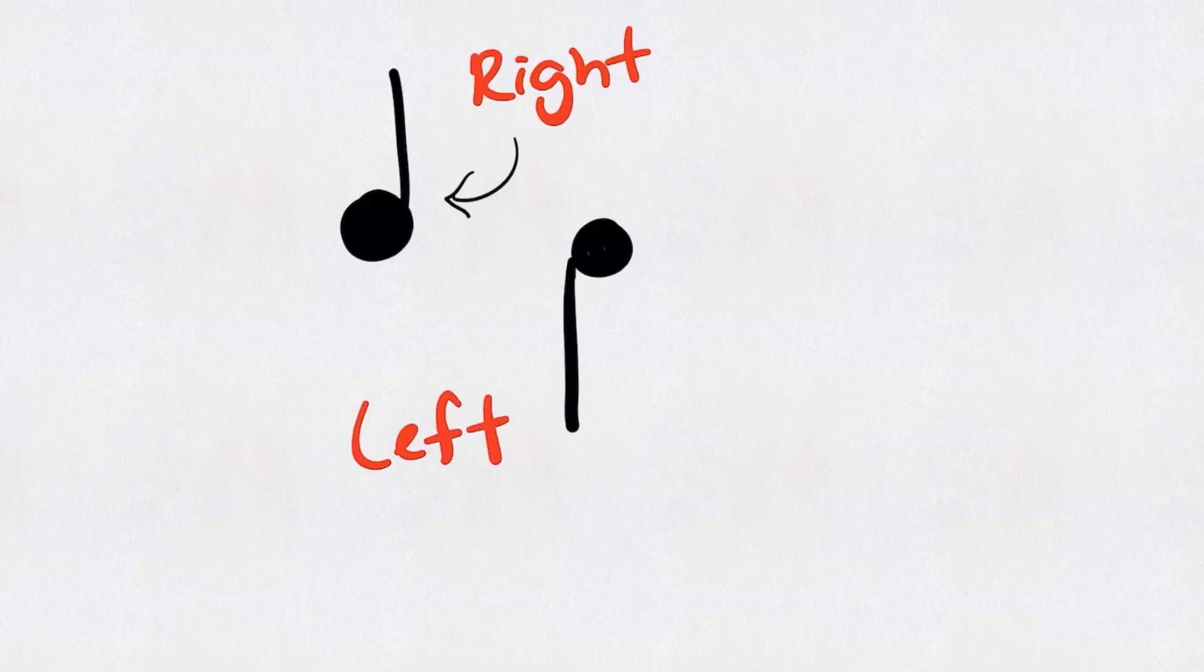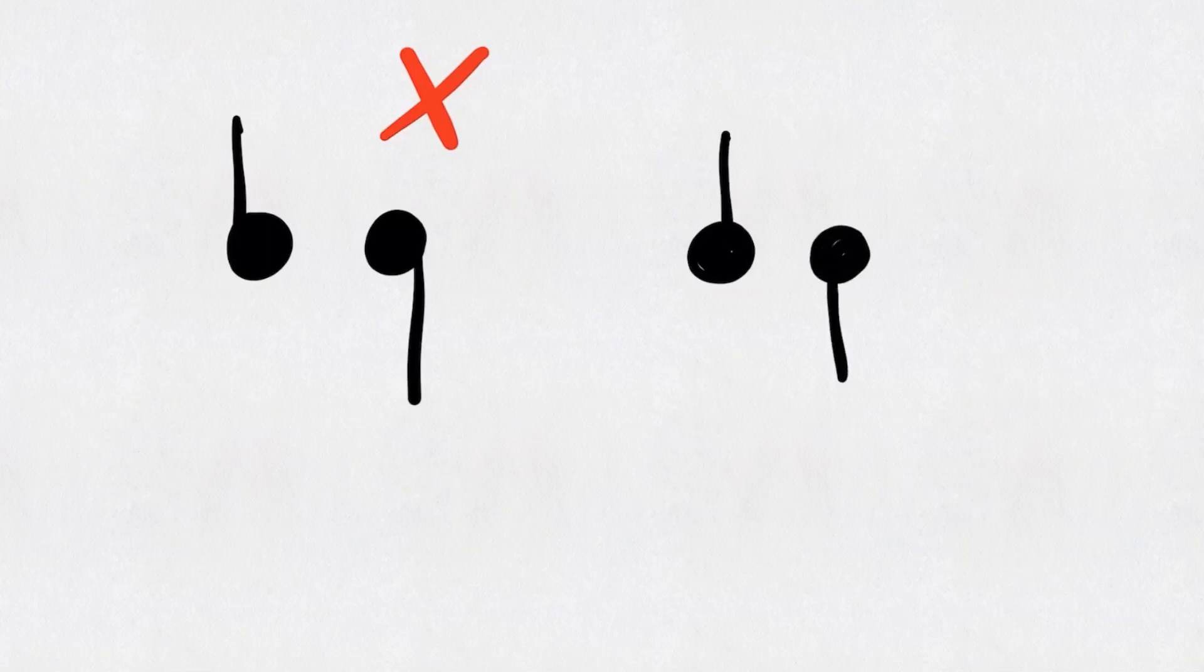But always remember, when the stem goes up, it has to be drawn at the right side of the note head. And when it goes down, it must be drawn on the left side. This looks so weird. And remember, please, no lollipops.